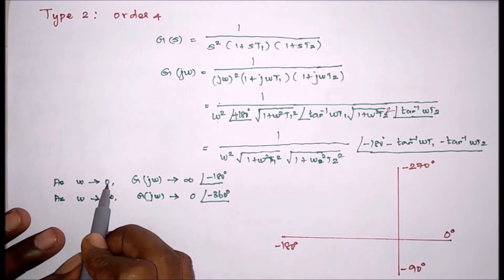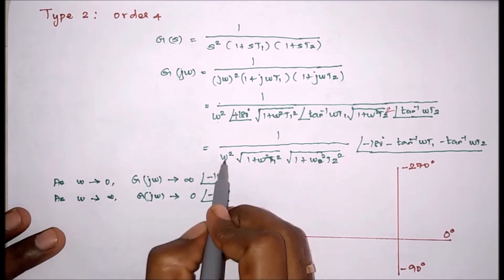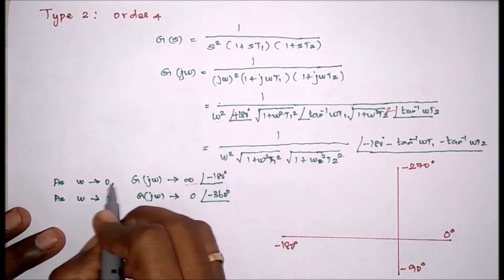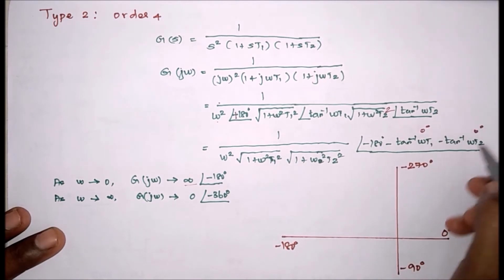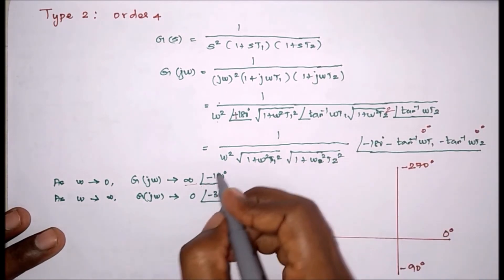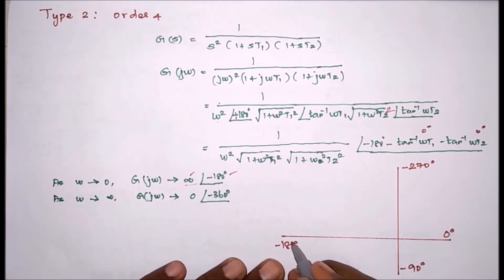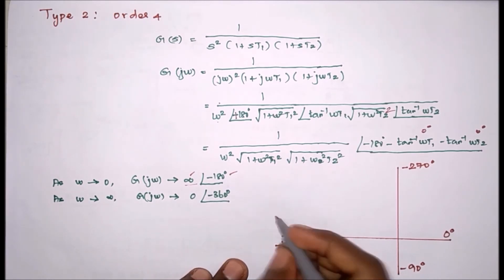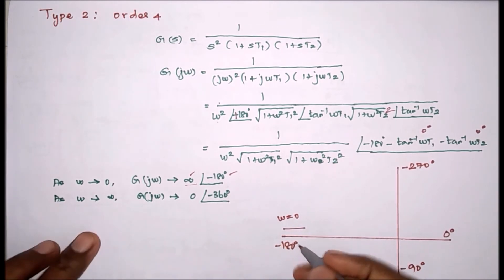Substituting ω = 0: the magnitude becomes 1/0 = ∞. The angle terms become 0°, so the total angle = −180°. Therefore at ω = 0, the polar plot starts at infinity at an angle of −180°.